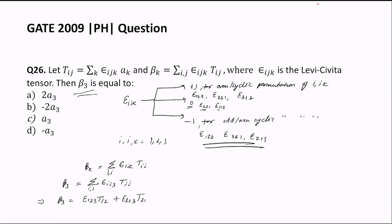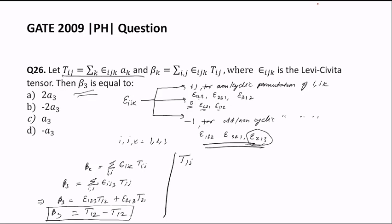So β_3 = ε_123 t_12 + ε_213 t_21. We know ε_123 = +1, so the first term is t_12. And ε_213 = -1, so β_3 = t_12 - t_21. Now using t_ij = Σ_k ε_ijk a_k, we find t_12 by setting i=1, j=2: t_12 = Σ_k ε_12k a_k. To avoid repeated indices, we set k=3, giving ε_123 a_3 = a_3. So t_12 = a_3.